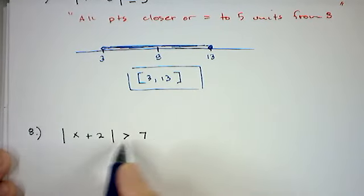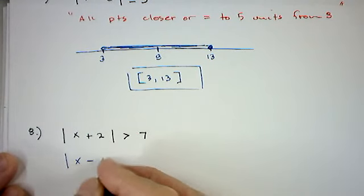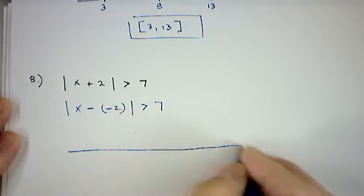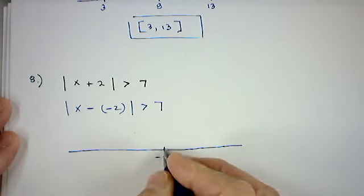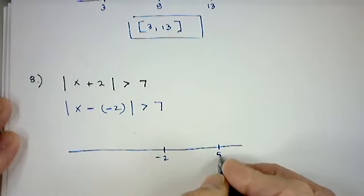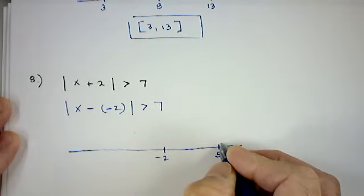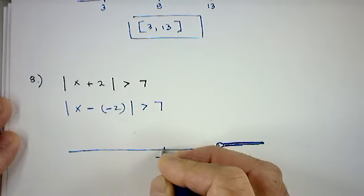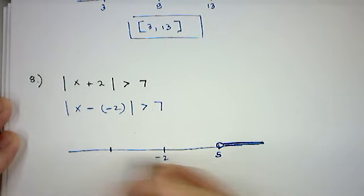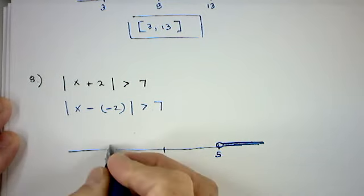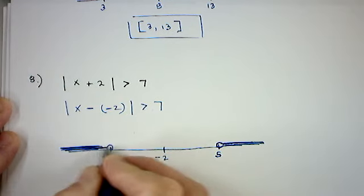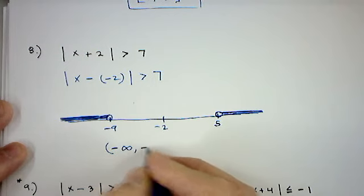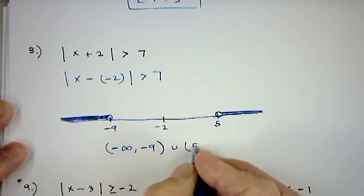For |x + 2| > 7, rewrite as |x − (−2)| > 7 — looking for all points more than seven units away from −2. Seven units to the right of −2 is positive 5; since we want strictly more than seven units, 5 is not included. Seven units to the left is −9; again not included. So in interval notation: (−∞, −9) ∪ (5, +∞).